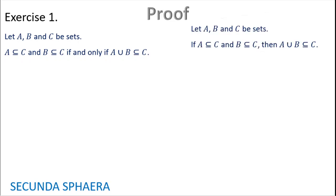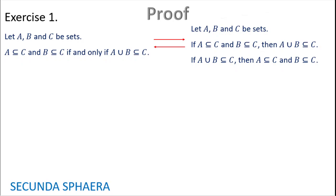It is important to notice that this exercise asks to prove an equivalence, and we can always break an equivalence into implications. The first implication will be: if A is contained in C and B is contained in C, then A union B is contained in C. The second implication is: if A union B is contained in C, then A is contained in C and B is contained in C. If we prove the two implications, we will have proven the original statement.